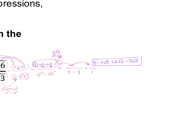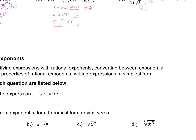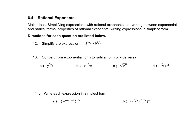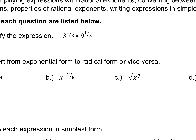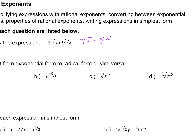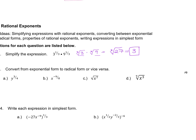Home stretch — section 6-4. Number 12: simplify 3 to the one third times 9 to the one third. Think of that as the cube root of 3 times the cube root of 9. Multiply those and you get the cube root of 27, and the cube root of 27 is 3. Remember on your calculator, math four is cube root — you're welcome to plug that in if you can't remember it.